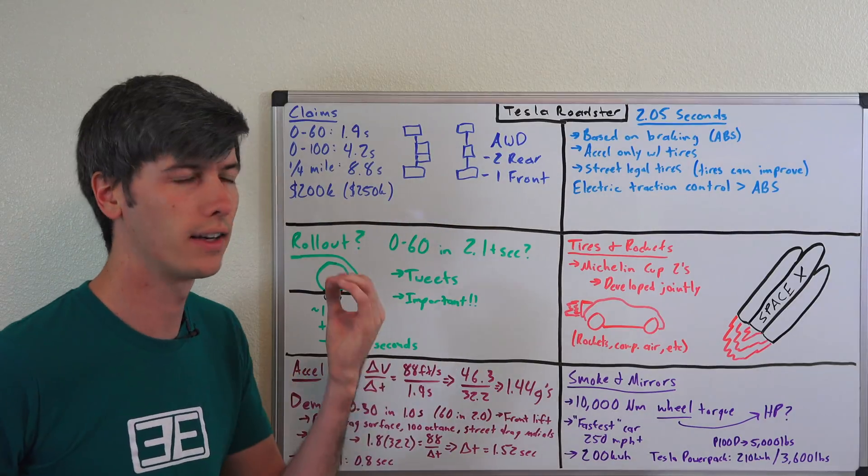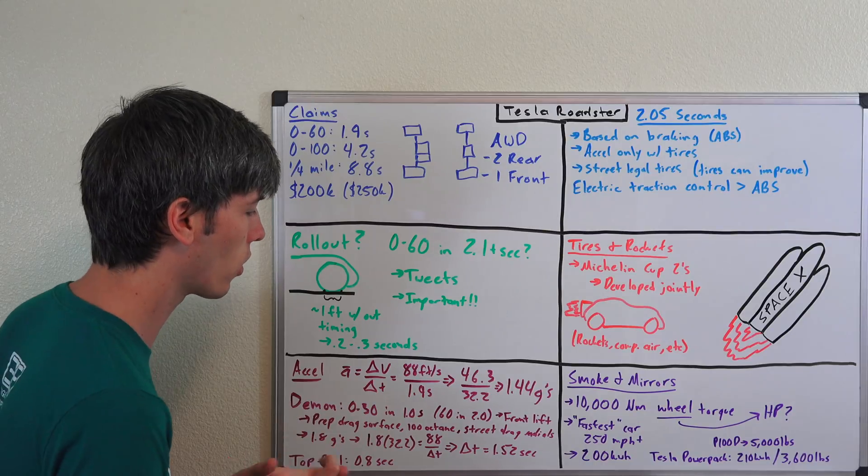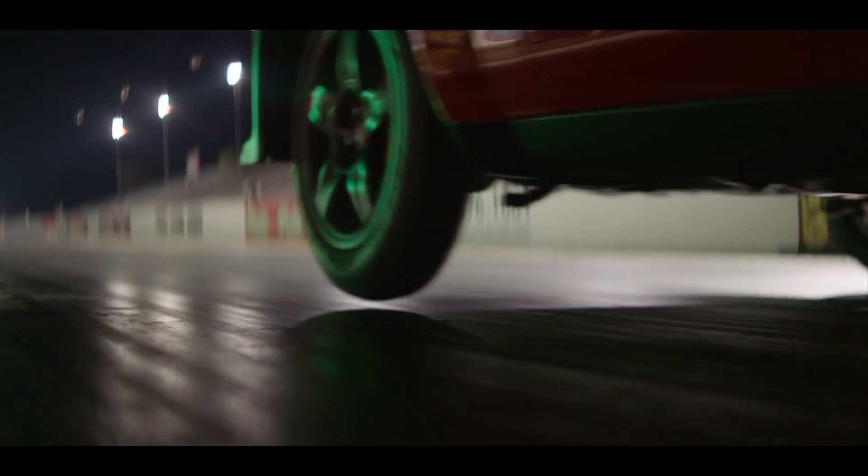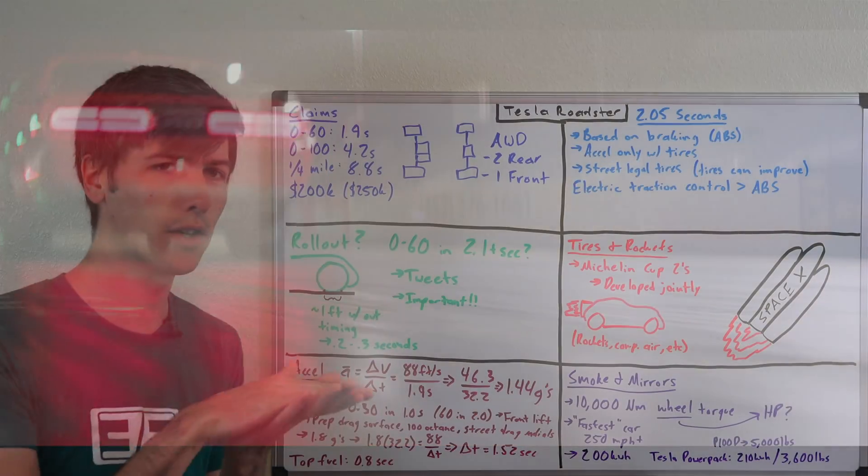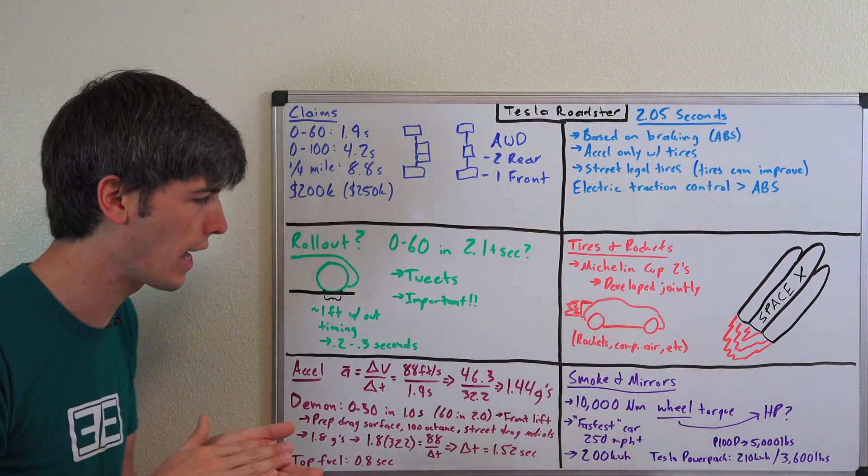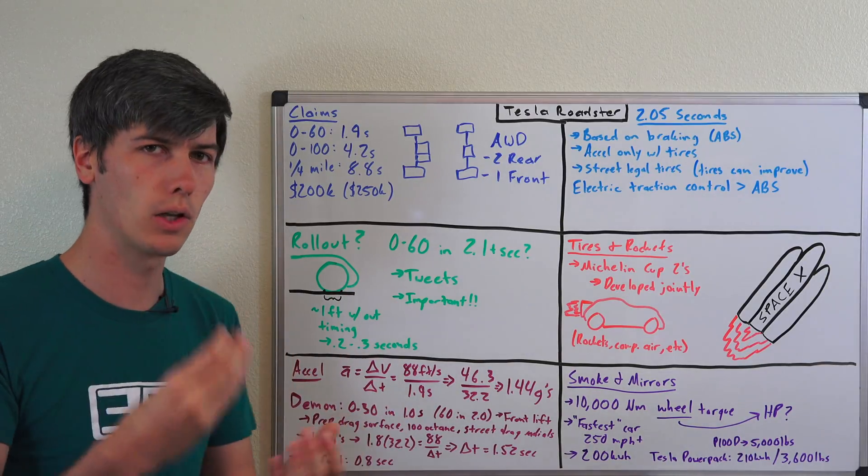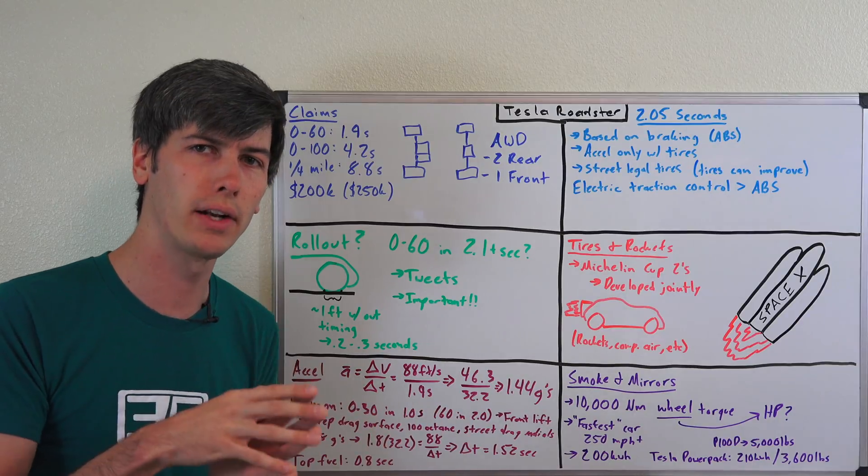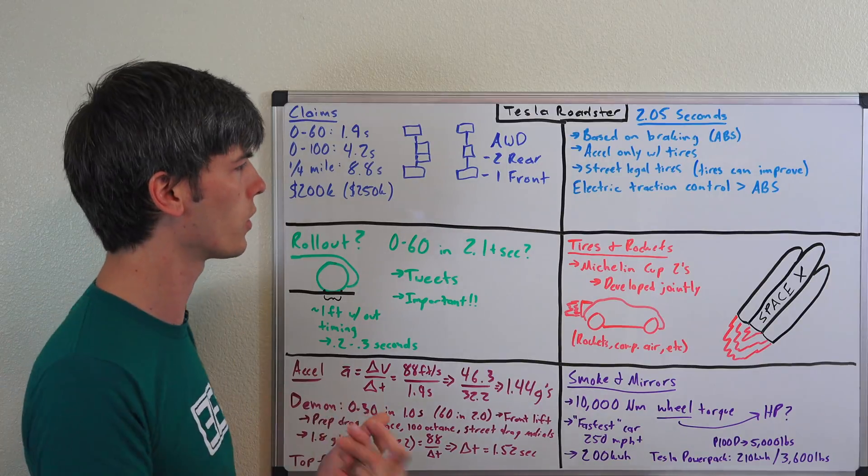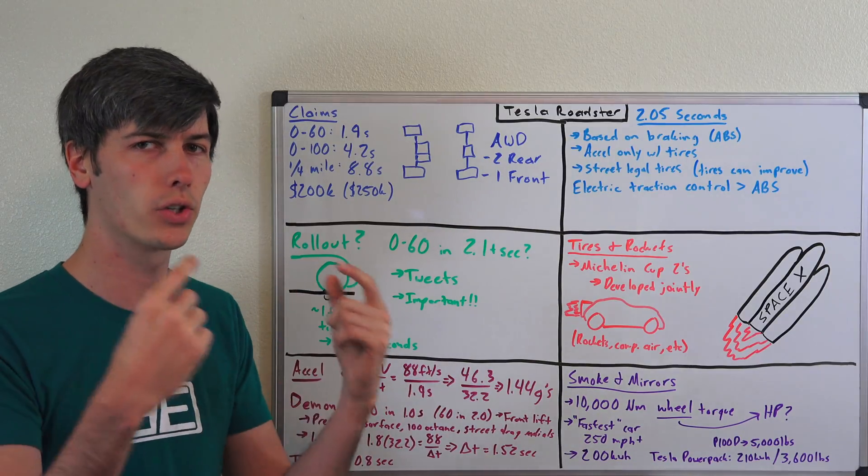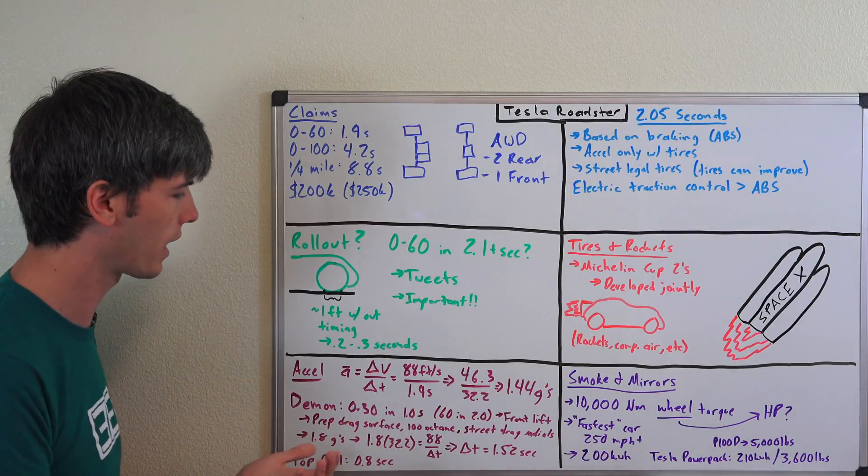I think there are some things to point out. First of all, the Dodge Demon lifts the front end and then it comes back down. Now when it comes back down, what that tells us is that there's weight on that front axle. You can actually steer the car a bit, you know, correct, and that means there's a load on the front axle. But that load on the front axle isn't doing anything to accelerate the car. So if the car were all-wheel drive like the Tesla Roadster, it could actually use those front tires to help accelerate more quickly.